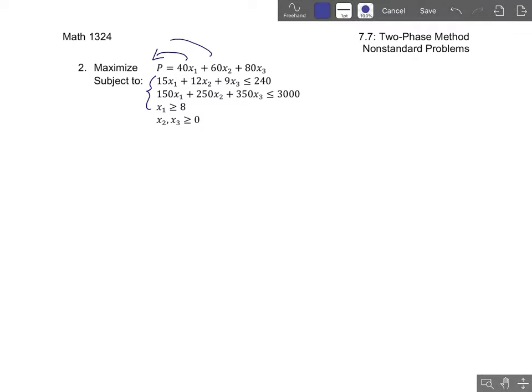So what I would do is I would first rearrange the objective row so that all of the variables appear on this left side. So we'd get negative 40x1 minus 60x2 minus 80x3 plus p equals zero, where p is this thing that we're trying to optimize.